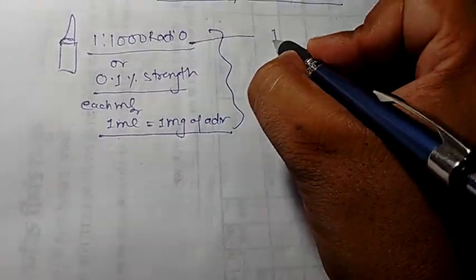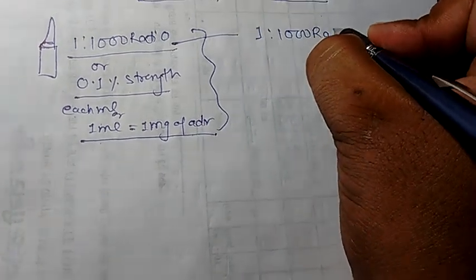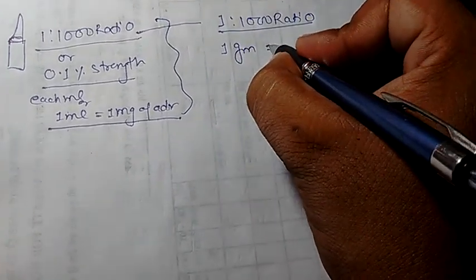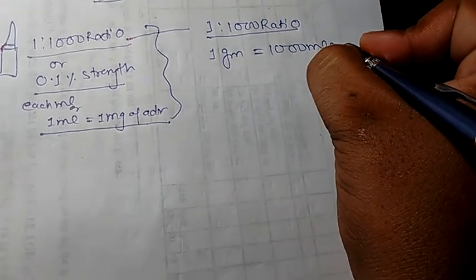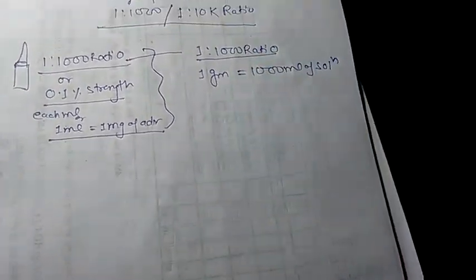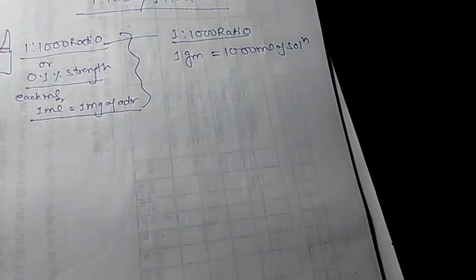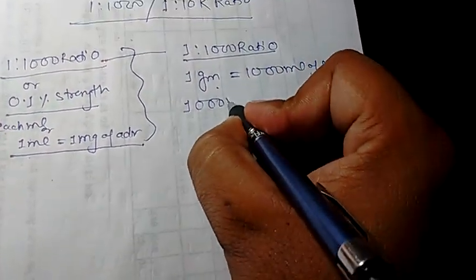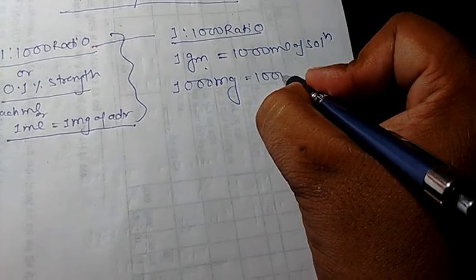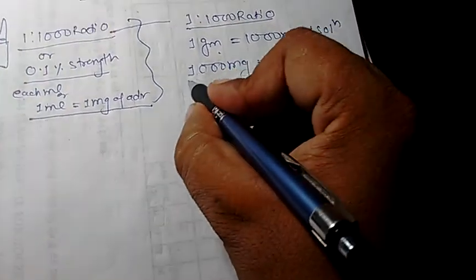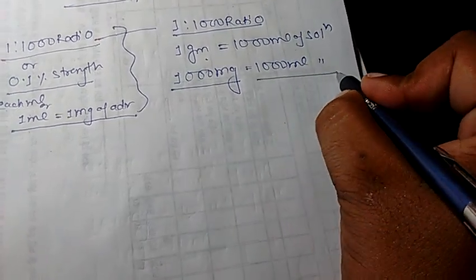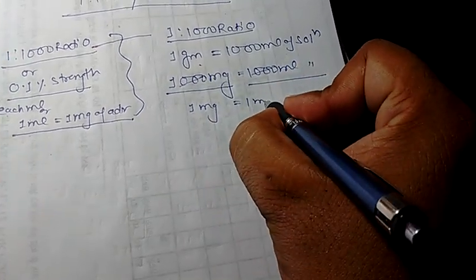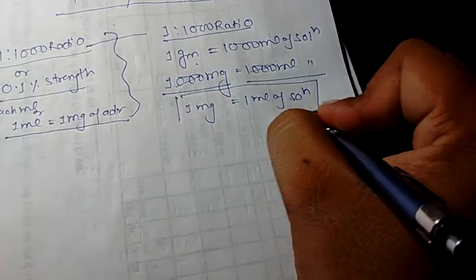First, what is the 1:1000 ratio? It means 1 gram dissolved in 1000 ml of solution. So 1 gram Adrenaline in 1000 ml means 1000 mg in 1000 ml, which means 1 mg in 1 ml of solution. Got the point?